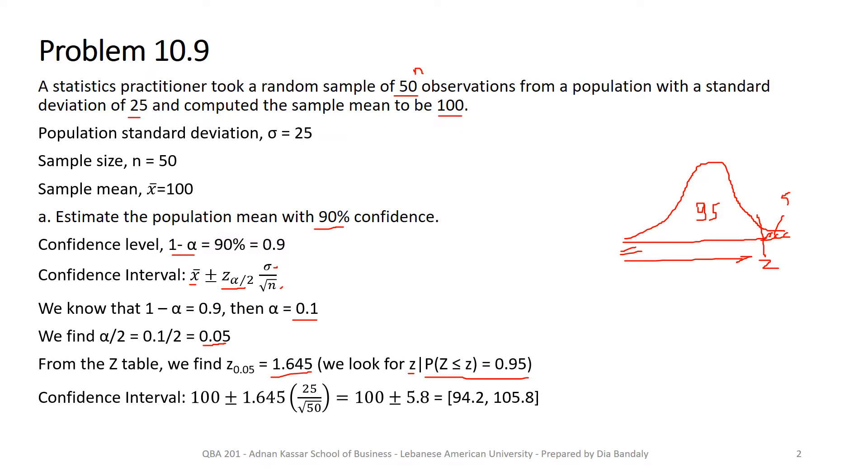So we have a confidence interval: 100 plus or minus 1.645 times 25 over square root of 50, which equals 100 plus or minus 5.8, giving us [94.2, 105.8]. So we have a lower level of 94.2 and an upper level of 105.8.